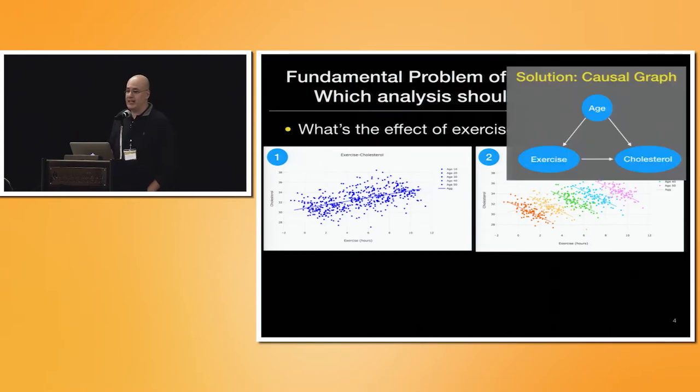Solution lies in, as we know in causal inference, the causal graph. That is essentially the explanation or the data generating model for these two different plots. The causal graph here is very intuitive. Baby graph, just to convey the point. We have each variable, each node is a variable. We have one for exercise, another for cholesterol, and another for age.